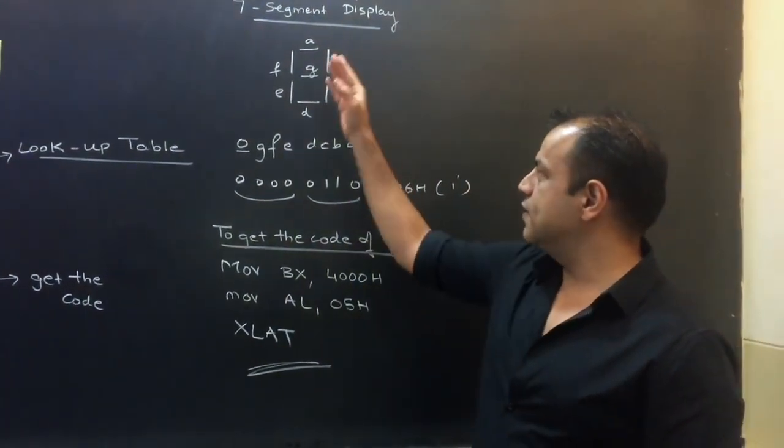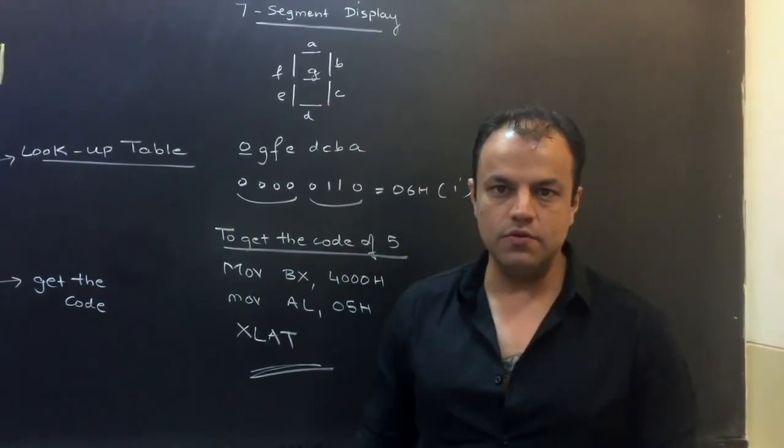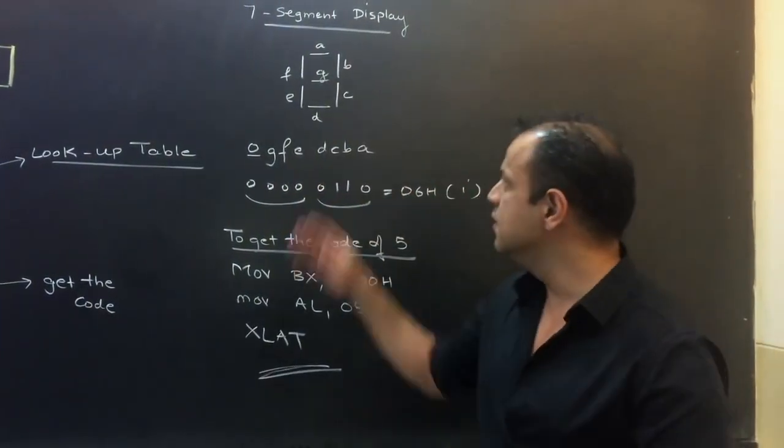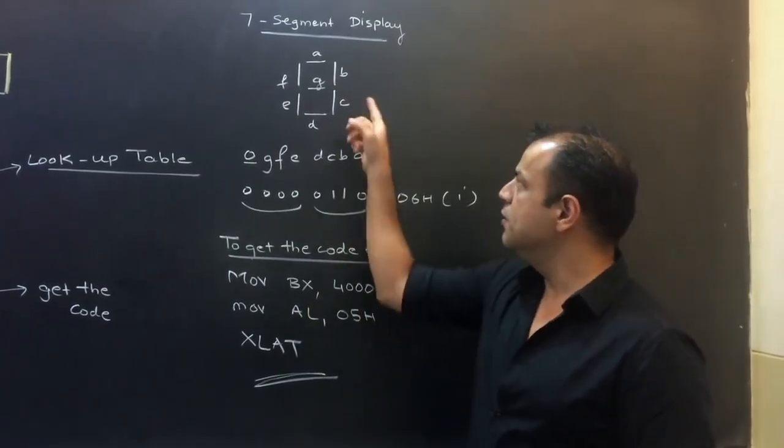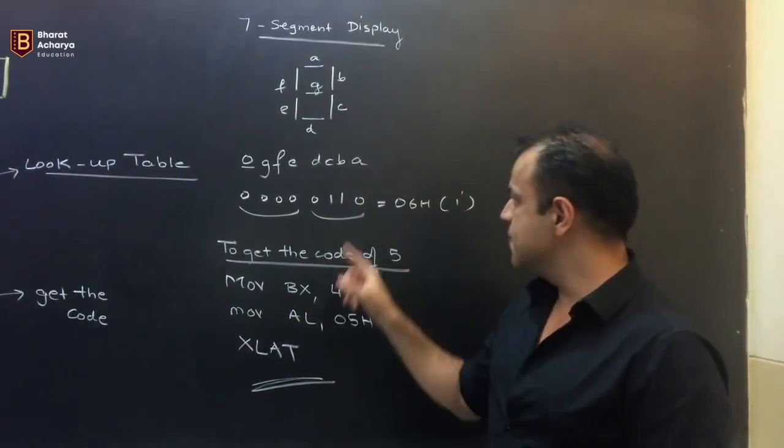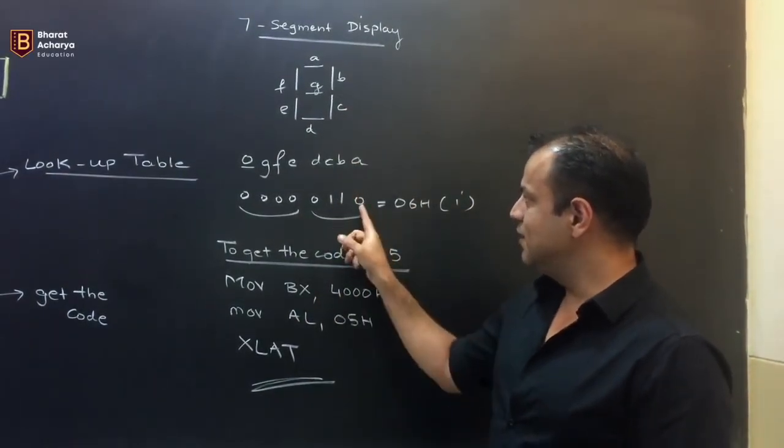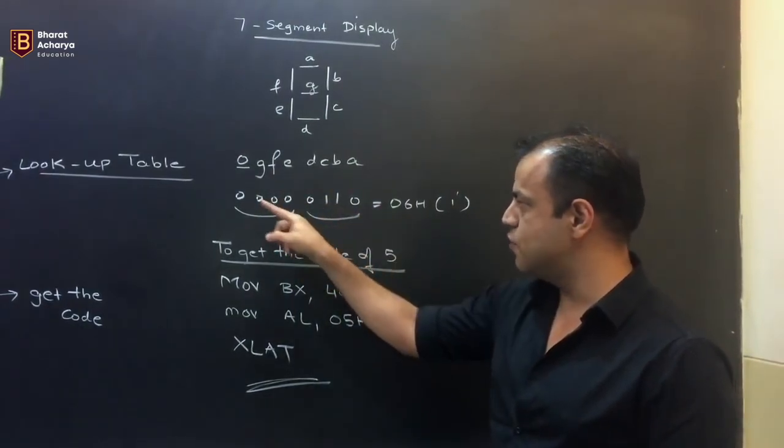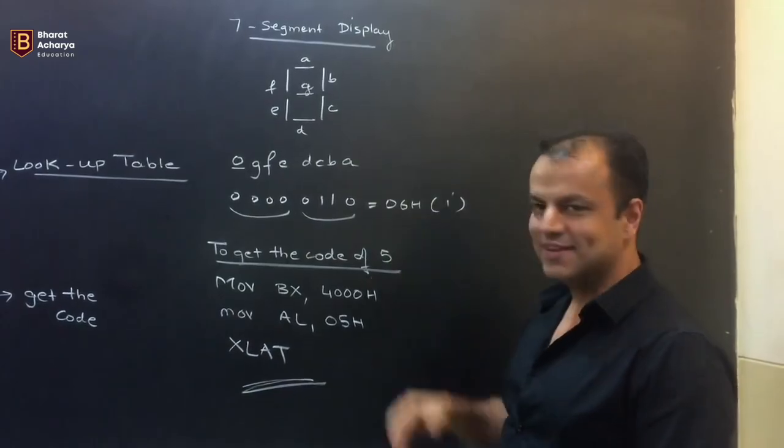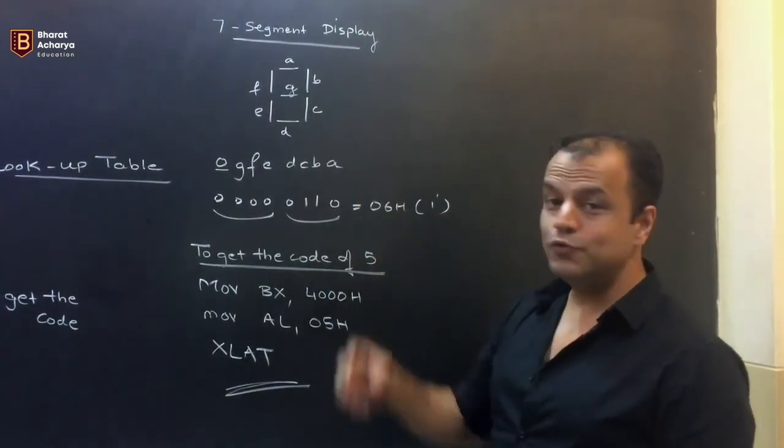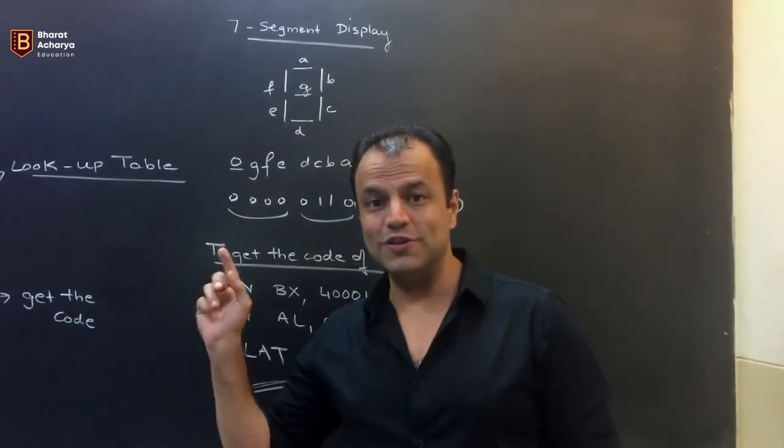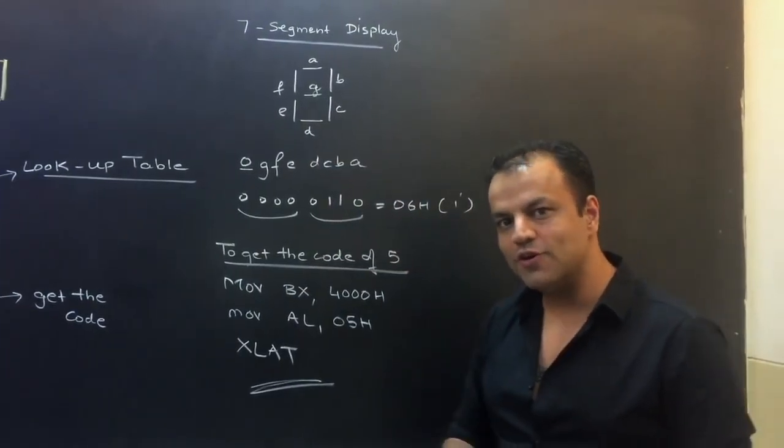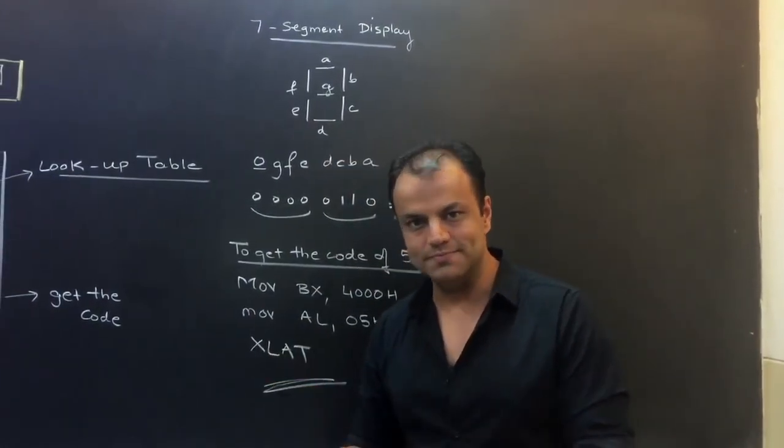Now, if they are all active high triggers. Triggers can be active high or active low. In displays, they are called common cathode and common anode. Anyways, keeping it simple, if they are active high triggers, B and C should be activated. So, B and C should be one. The others should be zero. So, if you see the number that is formed, that is 06 in hexadecimal. So, if you send 06 to this display, it ends up displaying 1. So, 06 is called the seven segment code of 1. Are we clear?